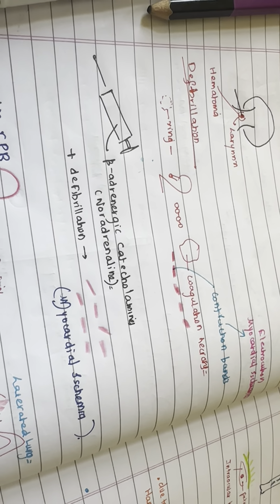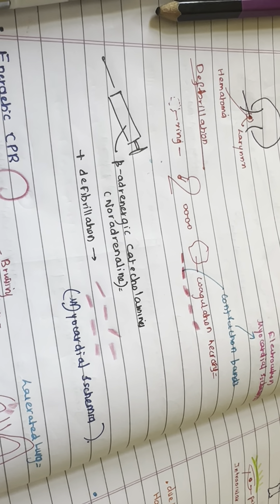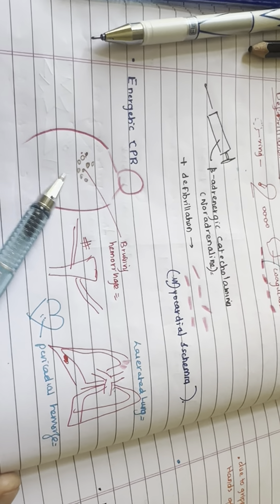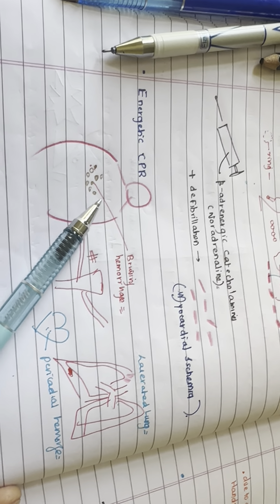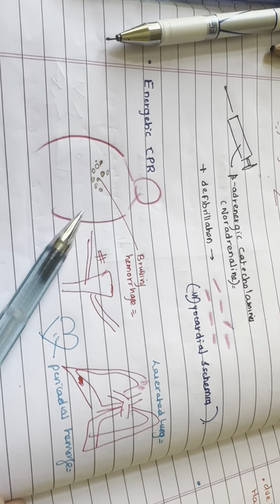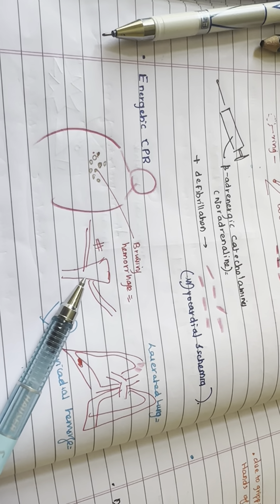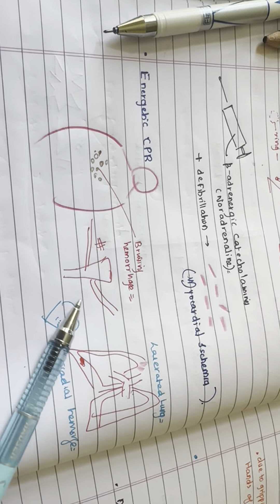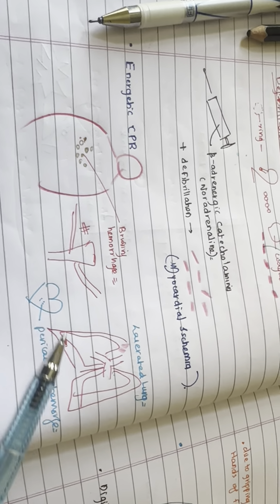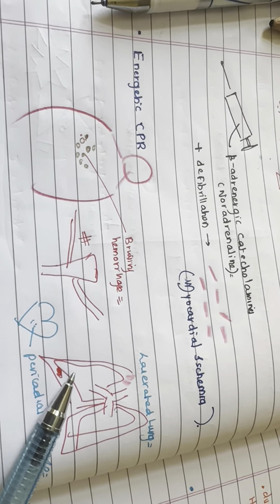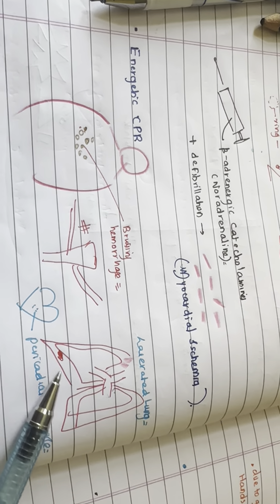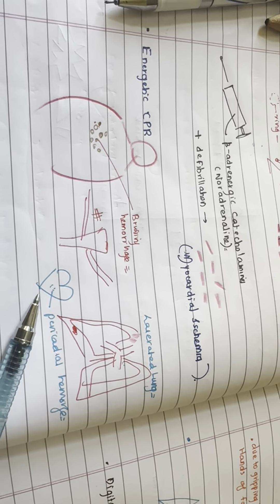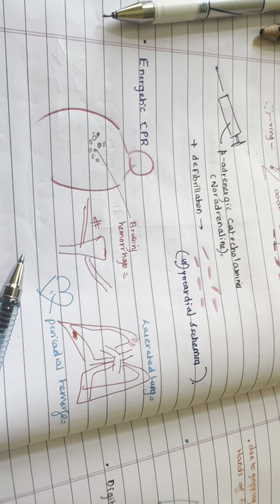Energetic external cardiopulmonary resuscitation (CPR) may cause anterior chest bruising, hemorrhage into the subcutaneous tissues and pectoral muscles, fracture of the sternum, ribs, and dorsal spine — rarely in children. Complications include hemothorax, bruised or lacerated lung, and pericardial hemorrhage.